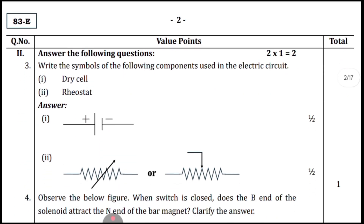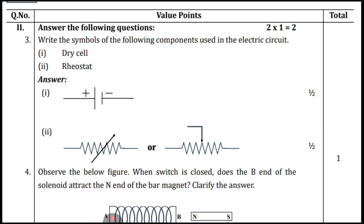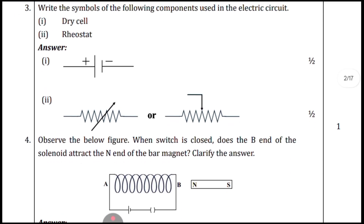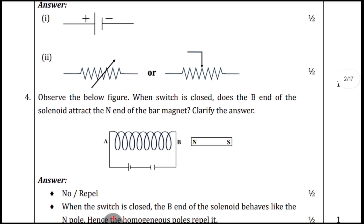Coming to the following one-mark question on symbols: symbols are very important in your board examination as well as preparatory examinations. Do practice all the symbols with their names. If given a symbol, write the name; if given a name, draw the symbol. The first one is dry cell. Coming to the rheostat, it is variable resistance. For rheostat, there are two symbols — draw both to be safe and get full marks.